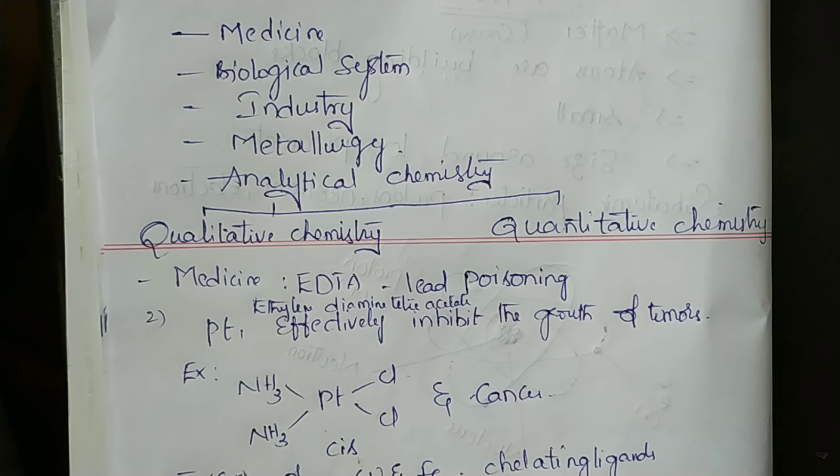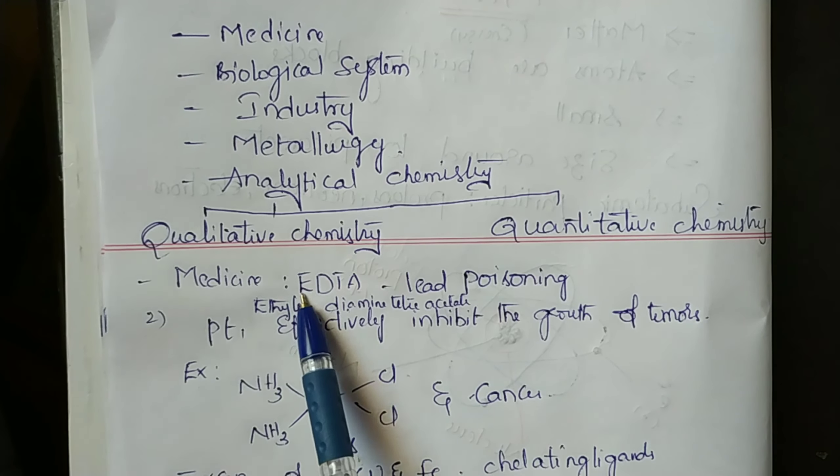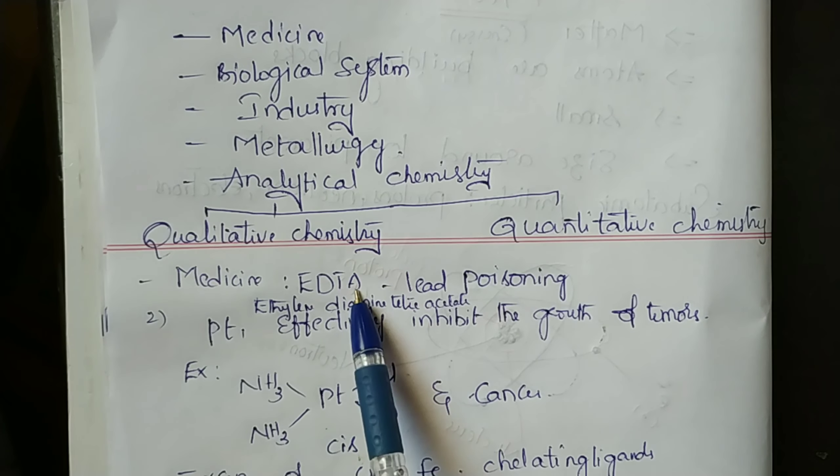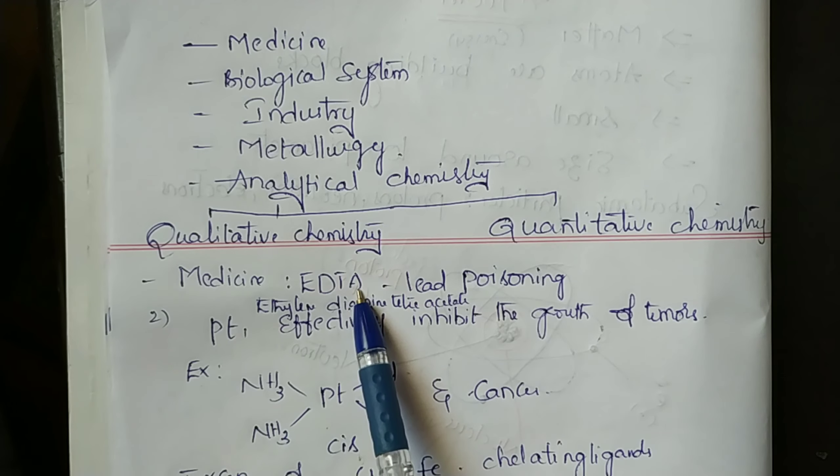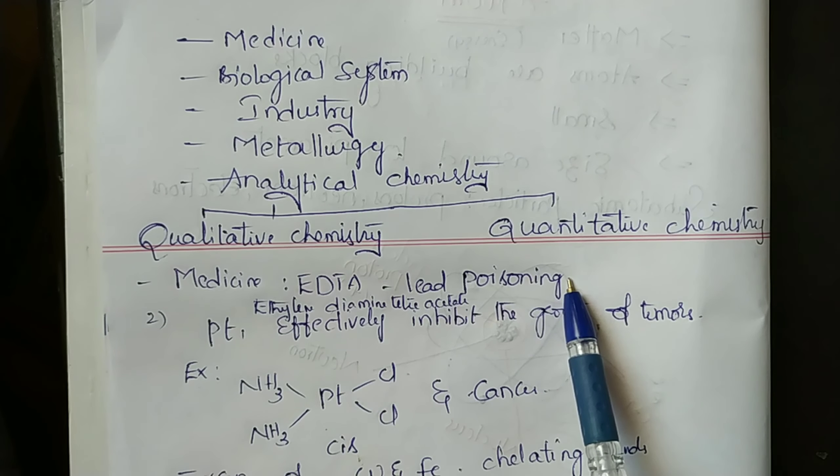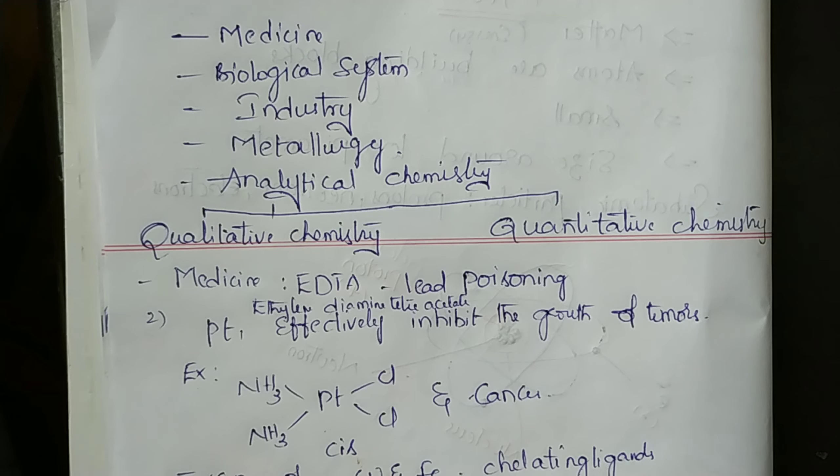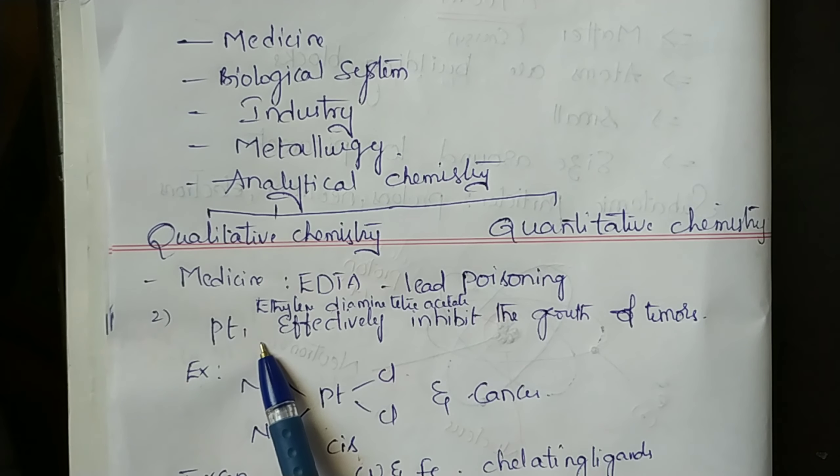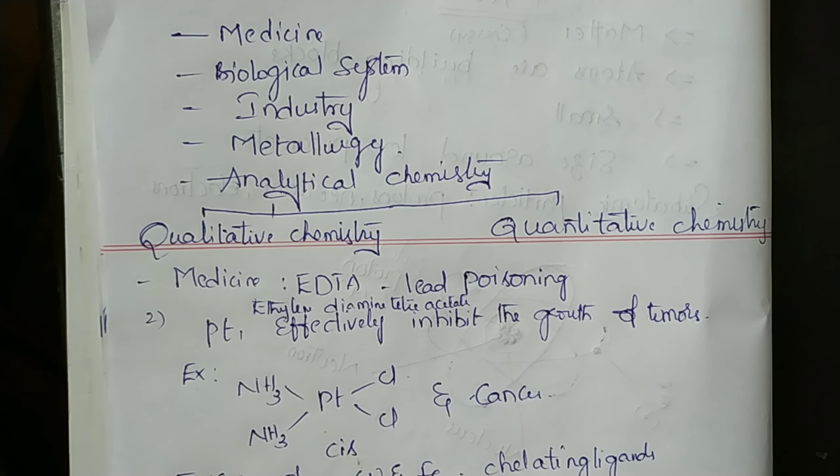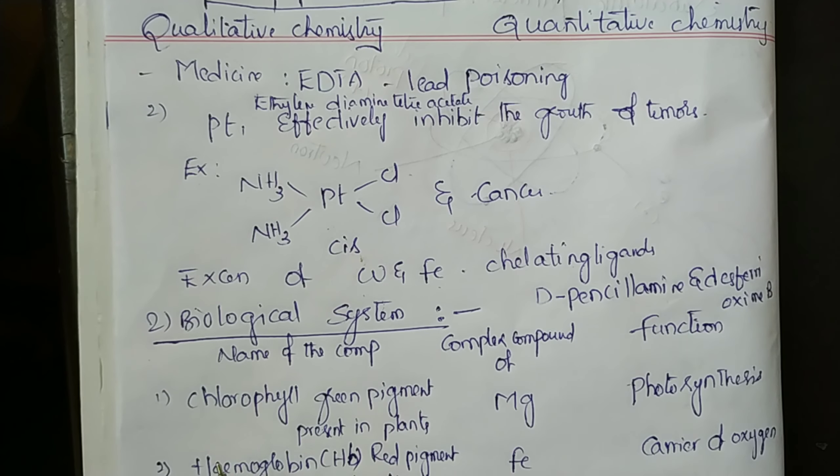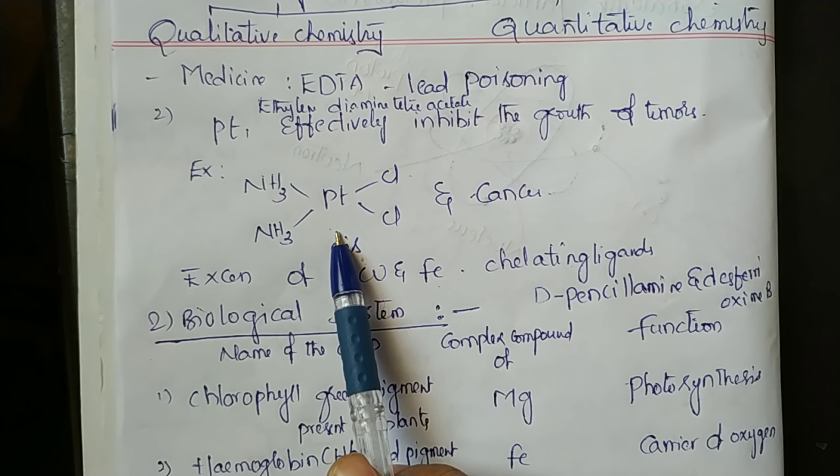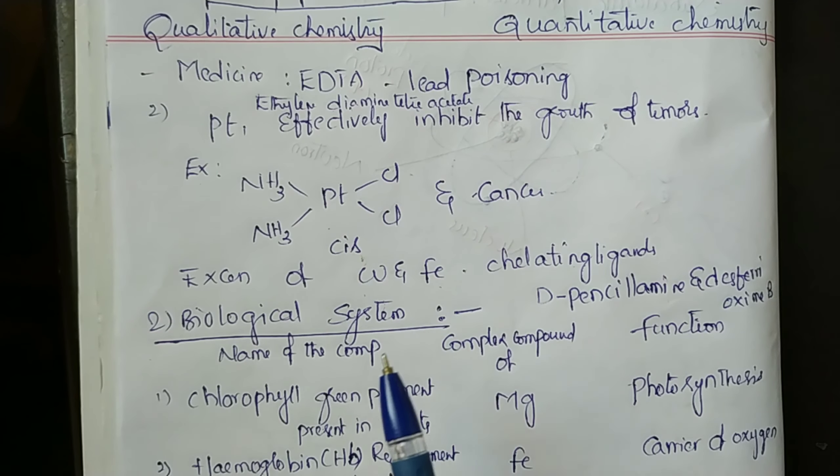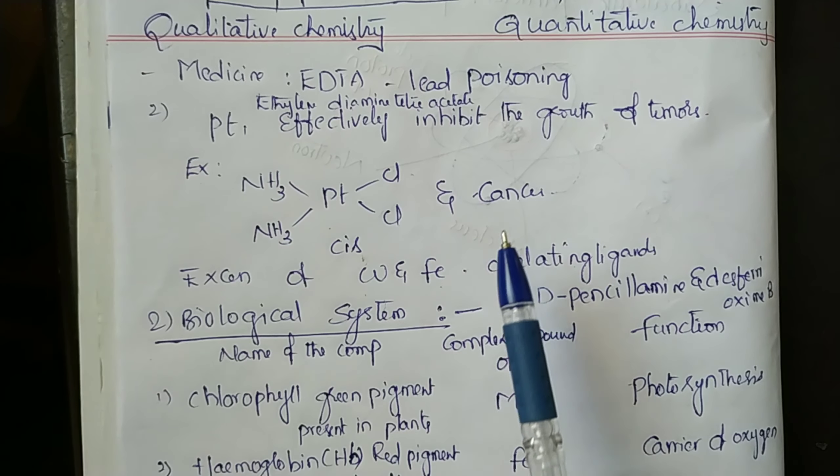In medicine, ethylene diamine tetraacetate (EDTA) is used in the treatment of lead poisoning. Some coordination compounds of platinum effectively inhibit the growth of tumors. Example: cisplatin and related compounds are useful in the treatment of cancer.